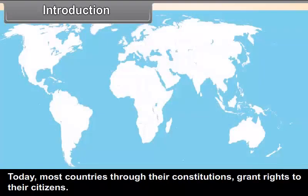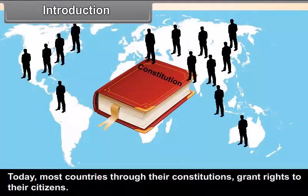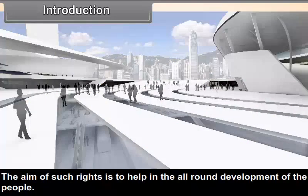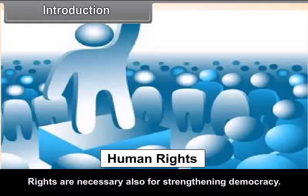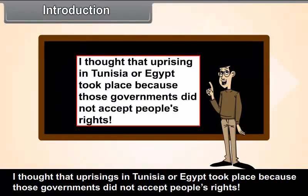Introduction. Today, most countries, through their constitutions, grant rights to their citizens. The aim of such rights is to help in the all-round development of the people. Rights are necessary also for strengthening democracy. The fundamental rights, therefore, constitute a very important part of a constitution. One example is how uprisings in Tunisia or Egypt took place because those governments did not accept people's rights.